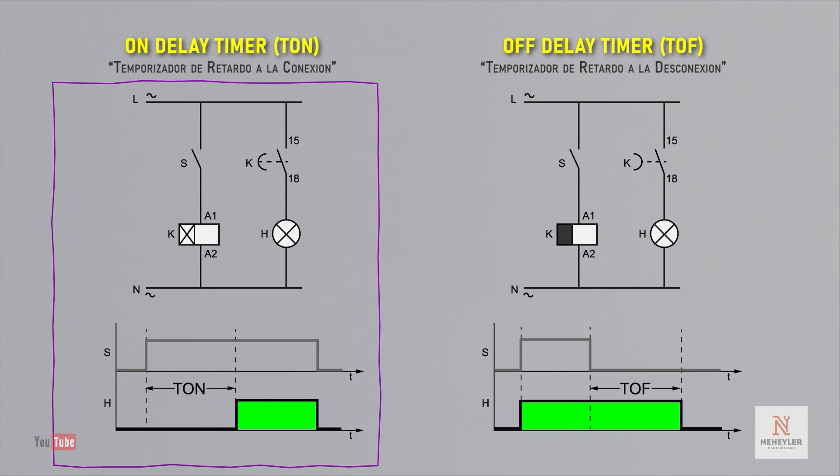If we open contact S to de-energize the coil, contact K of the timer immediately changes state and disconnects the circuit, since it only acts at the time of connection but not at disconnection.